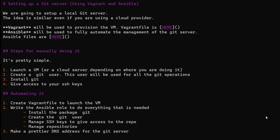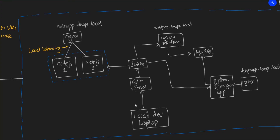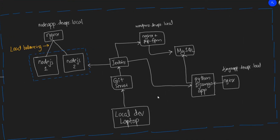Hi everyone, welcome back. In the previous video we talked about using git in general, and if we go back and look at the plan for the infrastructure, we see that we need a git server. That's what we're going to set up today — a git server that will store all the demo applications we'll be working on.